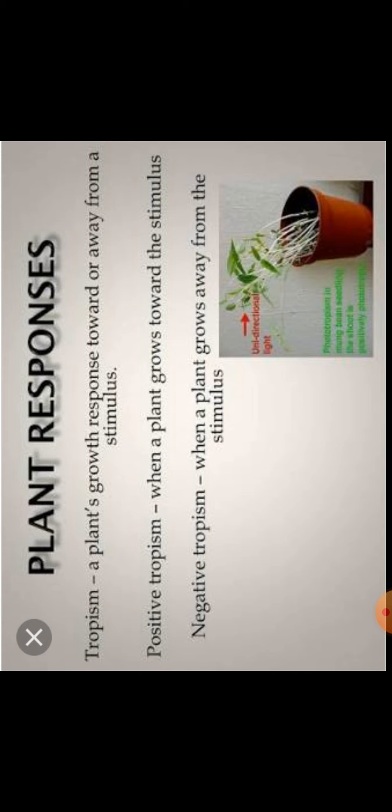Trophic movements are of two types: positive and negative. When a plant grows towards the stimulus, it is known as positive tropism. When the plant grows away from the stimulus, that is negative tropism. For example, stem always grows above the soil and towards light — that is a positive movement. But roots grow downward, below the soil and away from light, so it is negative tropism.